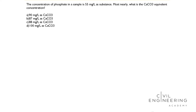The concentration of phosphate in a sample is 55 milligrams per liter as substance. Most nearly, what is the calcium carbonate equivalent concentration? In my previous video I showed the same problem — that time we calculated the calcium carbonate equivalent concentration for sulfate in a sample. In this video today we are going to solve for phosphate.